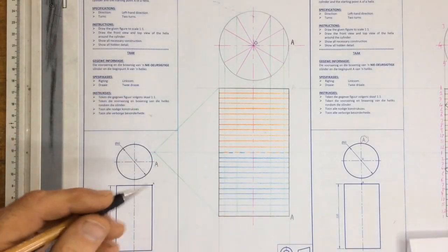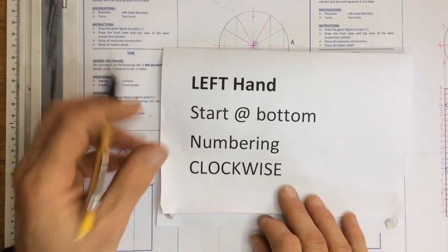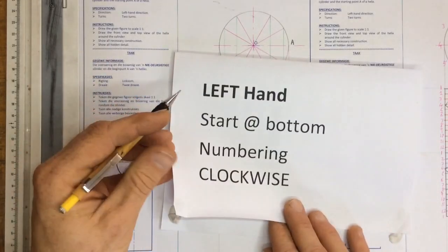Whenever I'm doing a left-hand thread, if I know that the starting point is at the bottom, then you need to do your numbering in a clockwise direction.